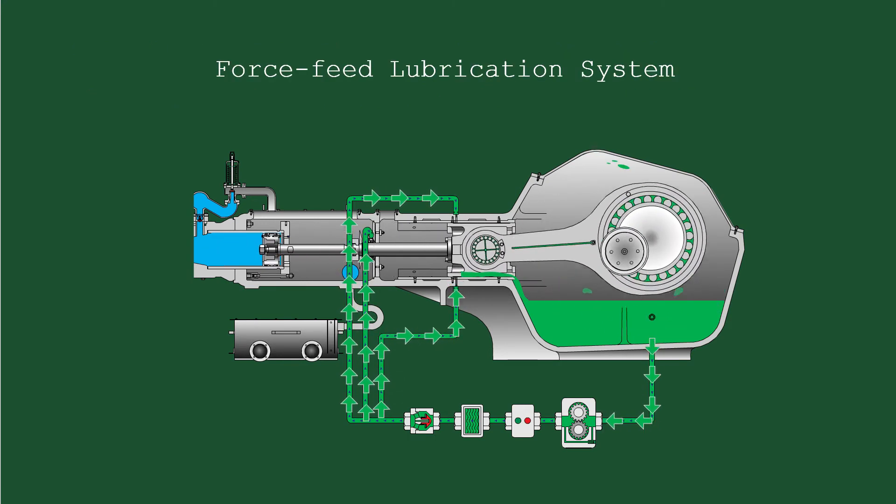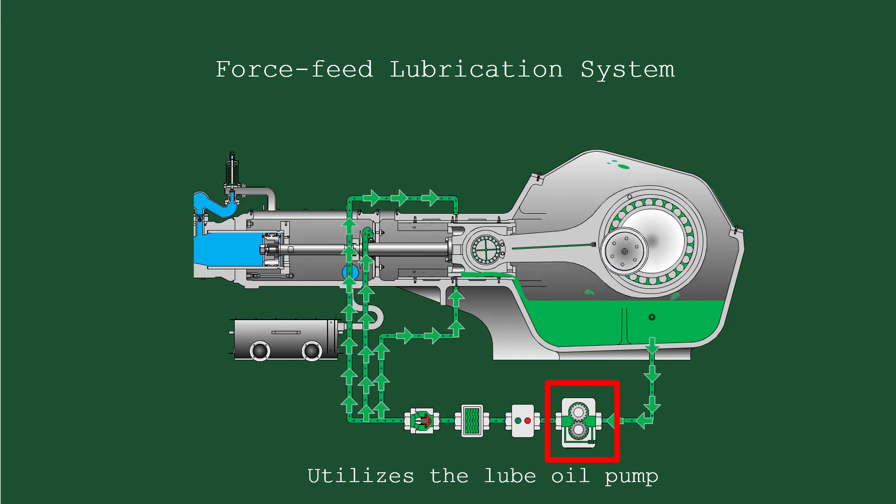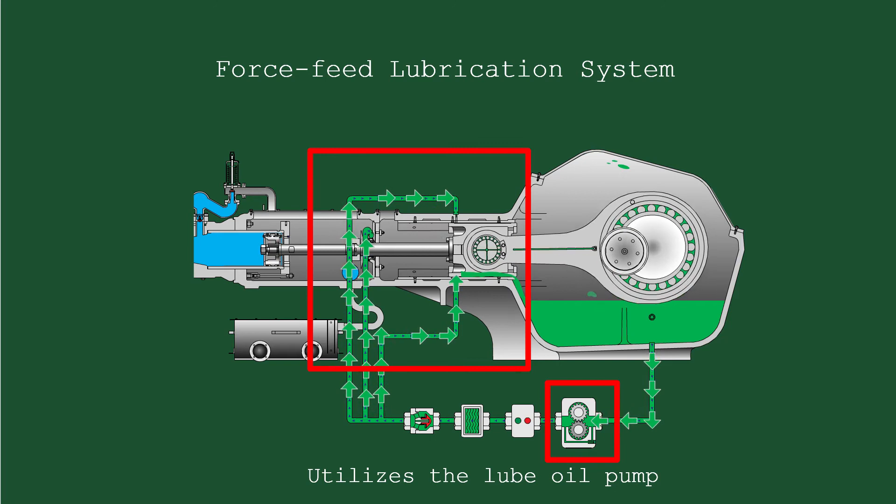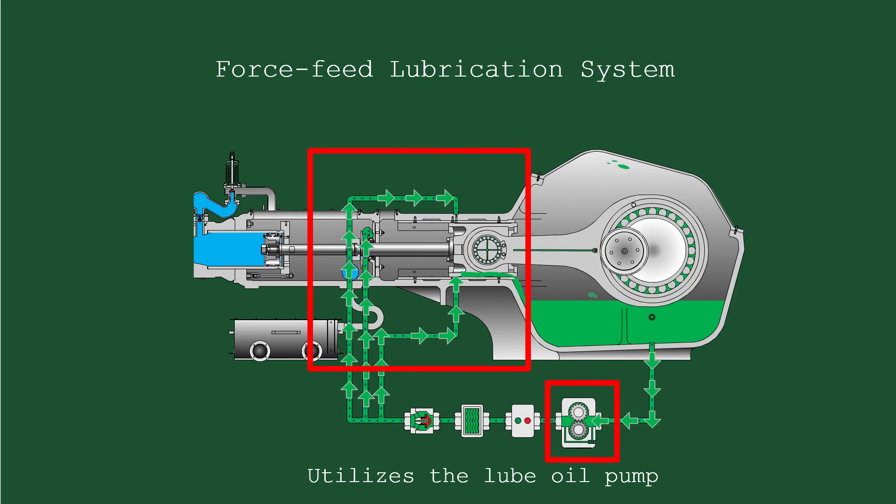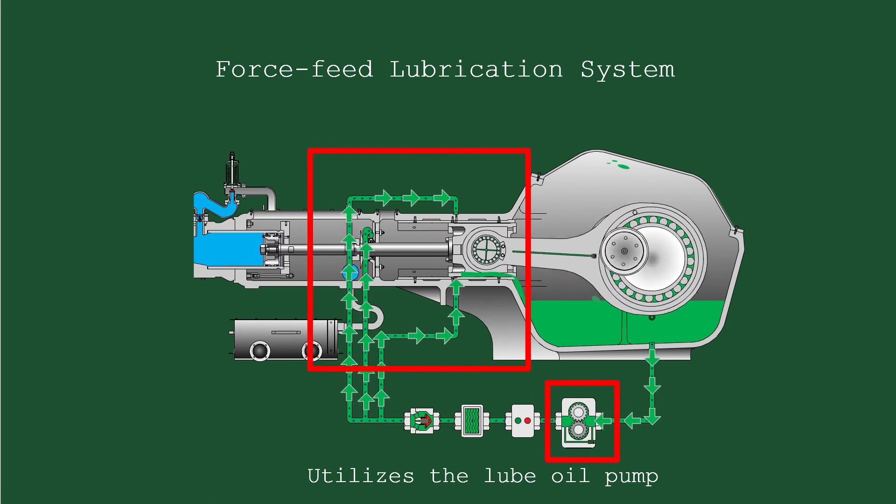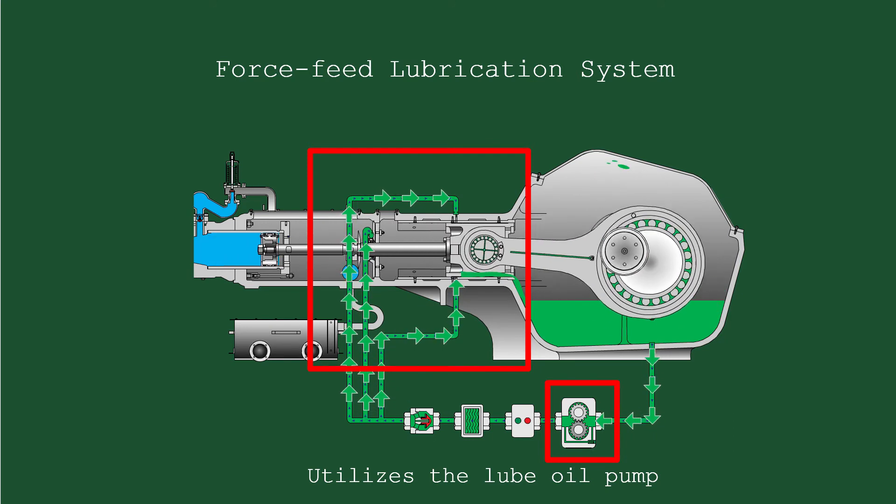The Force Feed Lubrication System utilizes the Lube Oil Pump, or M2 Pump, which lubricates oil under pressure on areas such as the Driveshaft and the Crankshaft Bearings, the upper and lower side of the Cross Head Liners, and the Cross Head Bearings, which are not sufficiently lubricated by the Splashed Oil System.